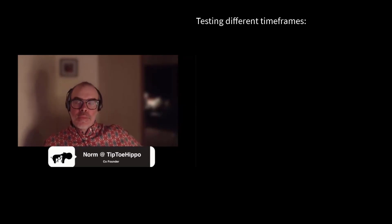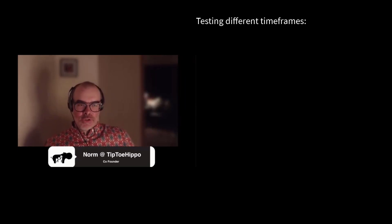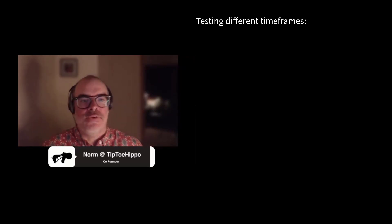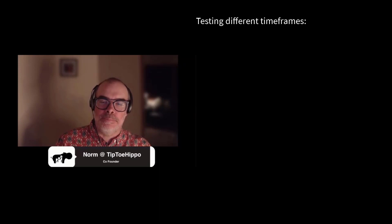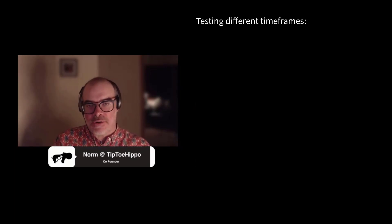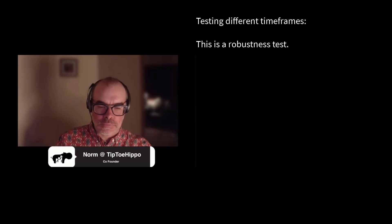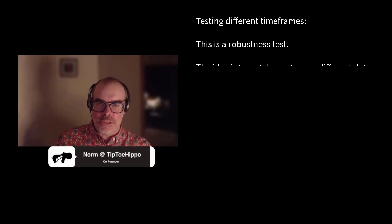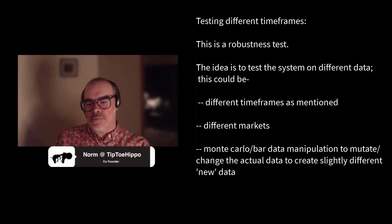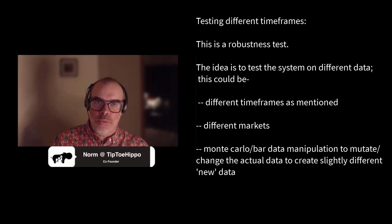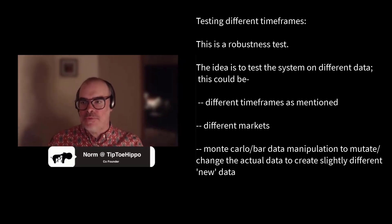Well, they're often correct for the same reasons, so there are lots of different reasons to do extra tests. The one that you mentioned is the extra time frame, and there are other ones like other currencies, switching around your data, Monte Carlo — all those kinds of things that change your data. They're all kind of doing the same thing: looking to see if the method that you're using works when the data is slightly different.